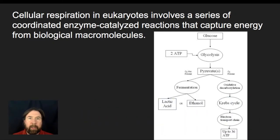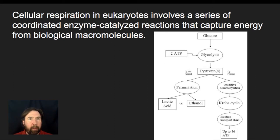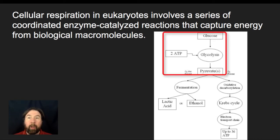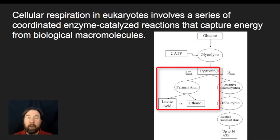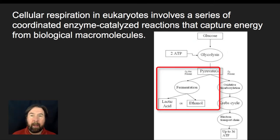Cellular respiration in eukaryotes involves a series of coordinated enzyme-related reactions that capture energy from a biological molecule. Glucose is broken down by glycolysis to form pyruvate — a series of enzymes breaks glucose down into pyruvate. Then if there's no oxygen, it's going to break down using the process of fermentation, again through a series of enzymes.